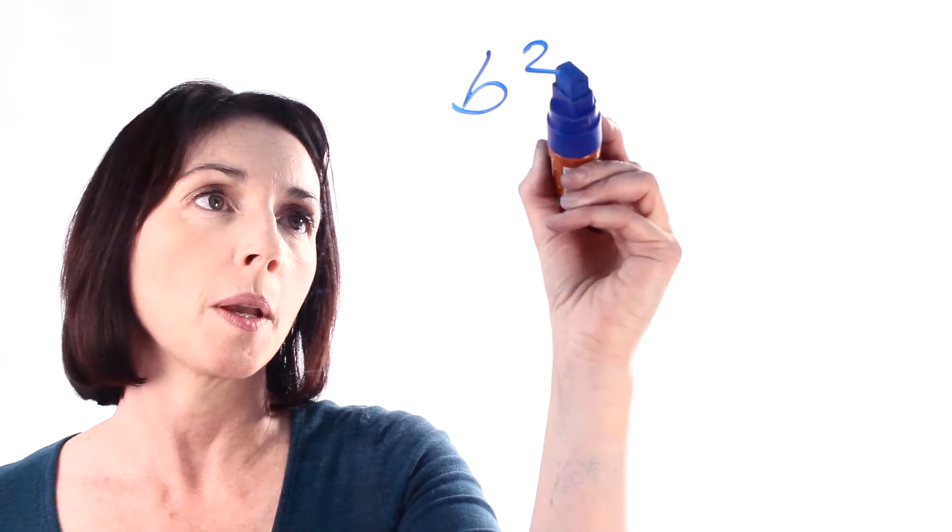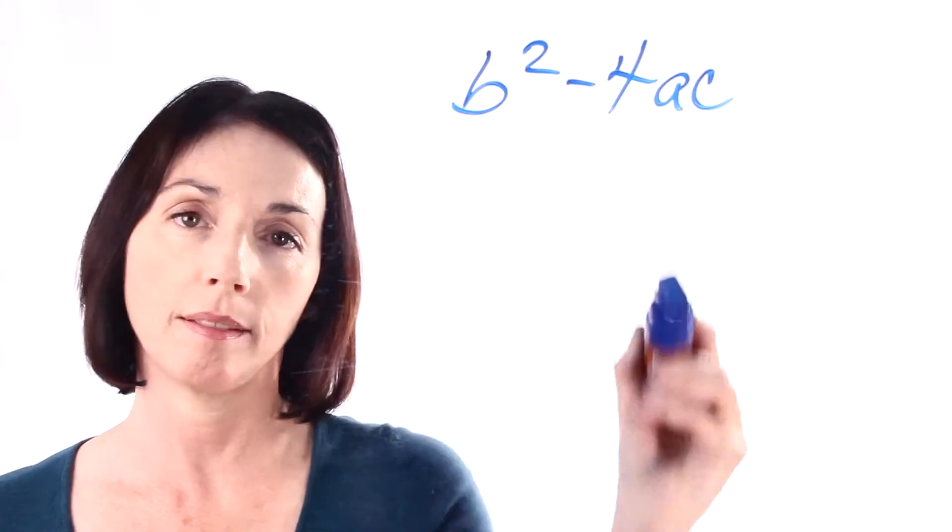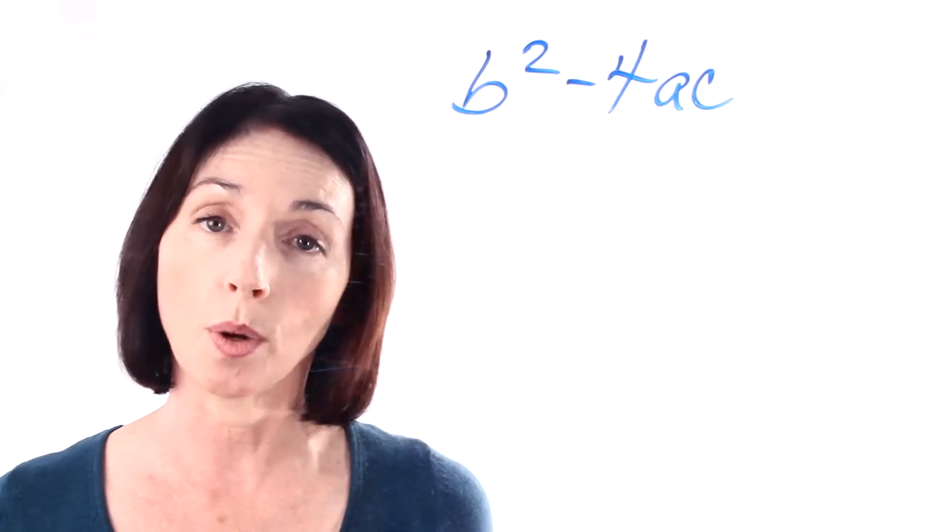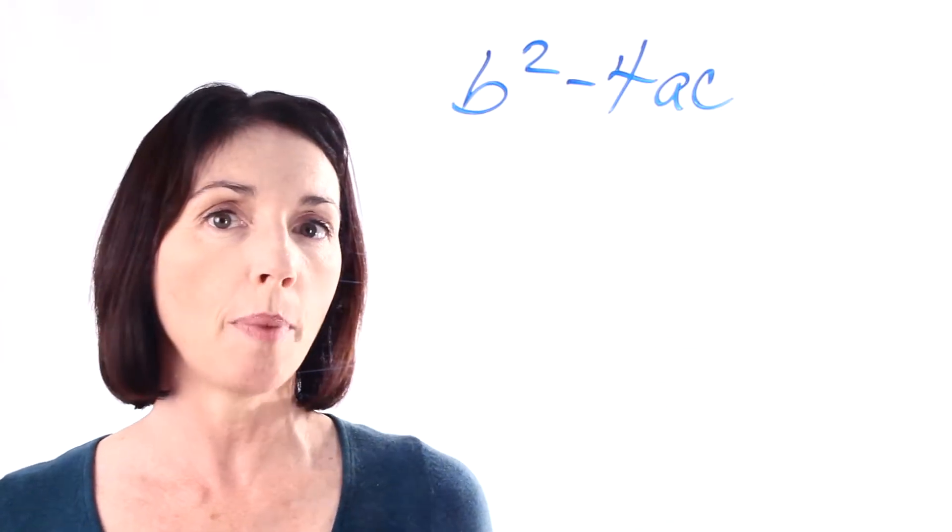The discriminant is b squared minus 4 times a times c. So when you plug those values in for whatever quadratic equation you're working with, you'll get three possibilities.